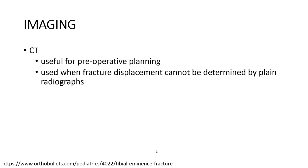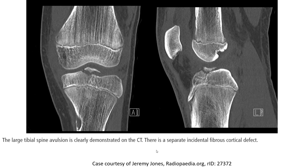CT is useful for pre-operative planning and is used when fracture displacement cannot be determined by plain radiograph. This is an example of a large tibial spine avulsion clearly demonstrated on CT. Additionally, this is a separate incidental fibrous cortical defect at the proximal portion of the physis, close to the metaphysis, at the proximal tibia.